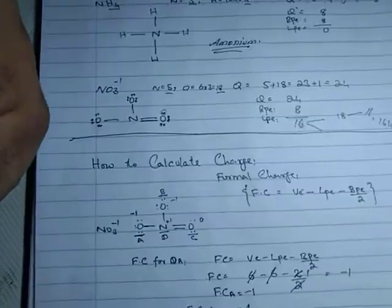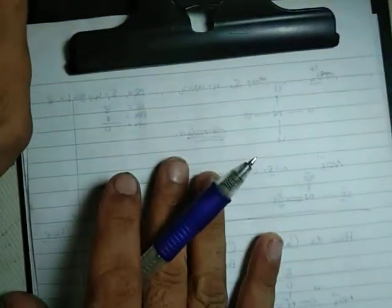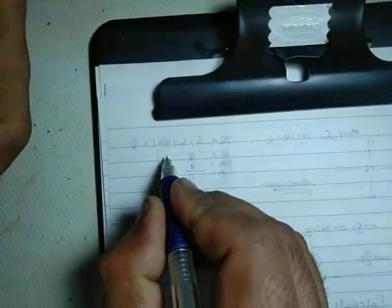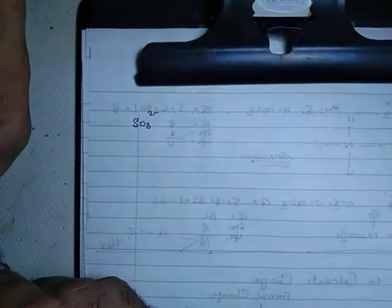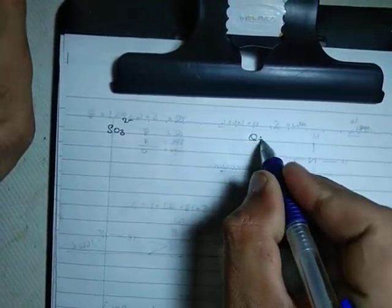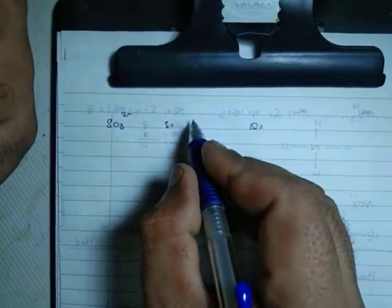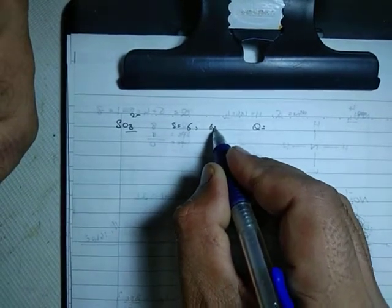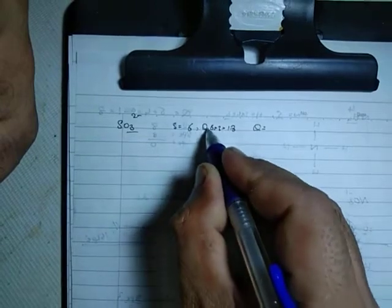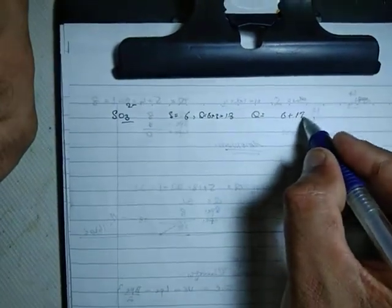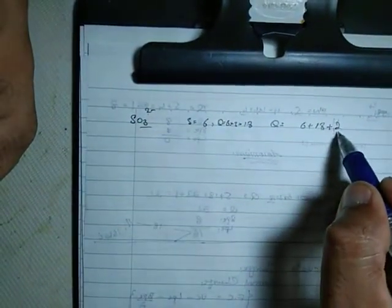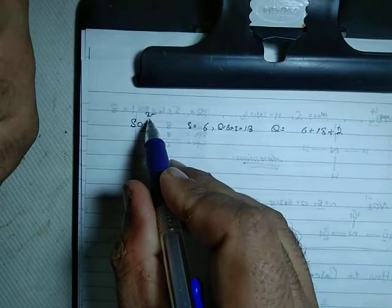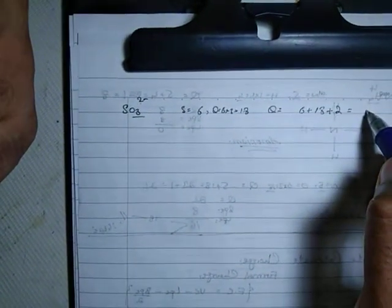Now let's take example 2: SO3 2-minus. First, we need to find the total valence electrons. Sulfur has 6 valence electrons, each oxygen has 6, so that's 6 plus 18, plus 2 for the negative charge, giving us 26 total electrons.